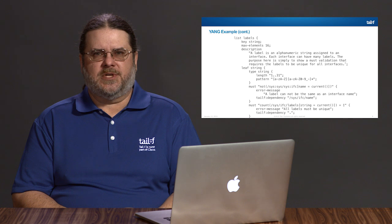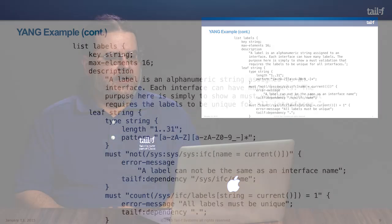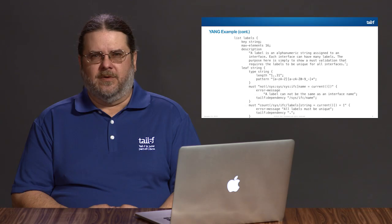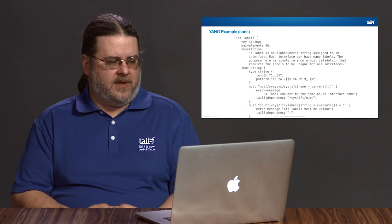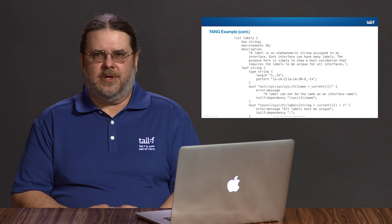The must statement is one of those key areas. Must allows you to select different data and express a constraint through them using XPath syntax. One must statement shown here enforces that labels can't be the same as an existing interface name, and also that all labels must be unique. We'll get more into the must statement in the Yang tutorial module and in a later module that focuses specifically on using must for validation with Yang.